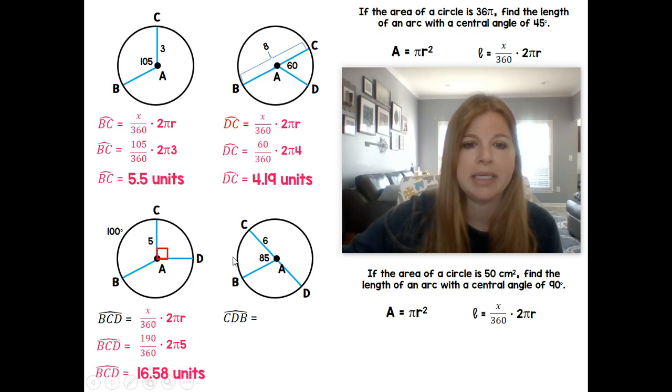This last one here, CDB. So definitely a major arc, CDB all the way around. If I wanted to calculate CDB, x over 360 times 2πr. If this is a diameter, which it is because it goes through my center, and this is 85 degrees, I have to know that this is 180.